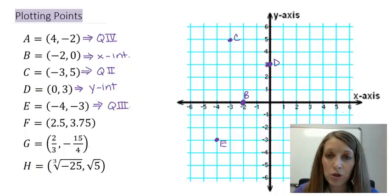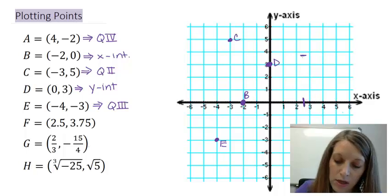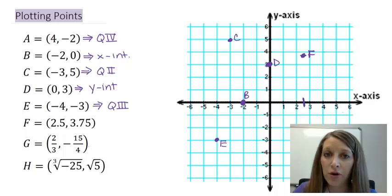So F is right 2.5 units, and then up 3.75 units. So I go right 2.5 units, which is about here, and then I go up 3.75 units. So where those two match is about right here. So the purpose of F, G, and H is just to emphasize that not all numbers that we deal with and not all ordered pairs or points that we deal with will always land exactly on whole numbers or the tick marks that I have already graphed out for you.